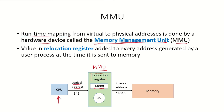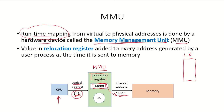For example, if the CPU generates a logical address of 346 and runtime mapping is being done, this logical or virtual address is added to the value in the relocation register for that process. So if the relocation register holds 14000, this value is added to 346 to generate the physical address 14346, which is seen in the main memory. So logical address 346 maps to physical address 14346 in actual main memory.